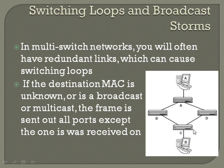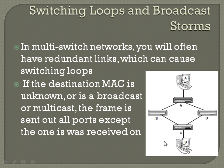Switch C looks at its CAM table and may not have a destination for B yet, so it forwards each of those individual frames out every port except the one it was received on. The frame that came from B gets forwarded to D as well as to computer B. The frame that came from D gets forwarded out all ports except back to D. So you end up with two copies of the same frame reaching B, and the frames keep going in circles, eventually taking up all switching resources. This causes what's known as a broadcast storm, because you're seeing so many broadcasts trying to find the destination MAC address.